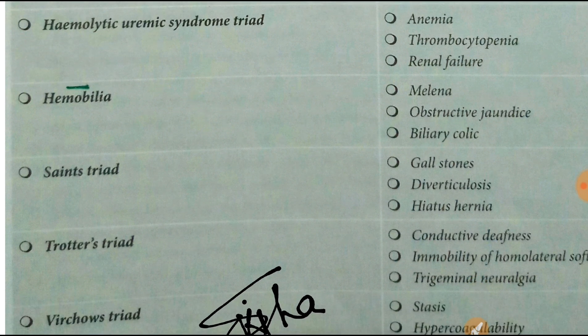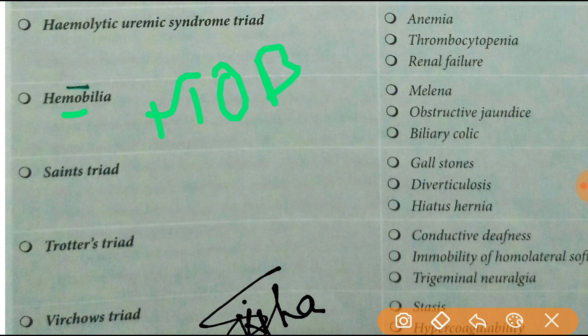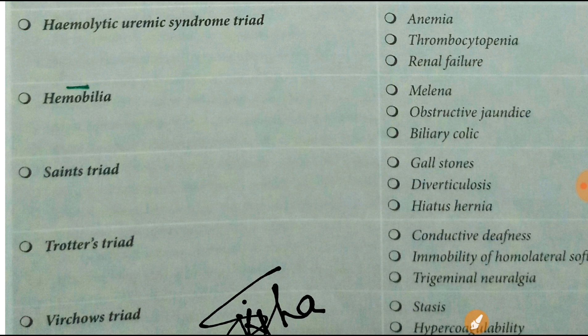Hemobilia triad is: melena, obstructive jaundice, and biliary colic. You can retain it by the mnemonic MOB — M for melena, O for obstructive jaundice, and B for biliary colic.